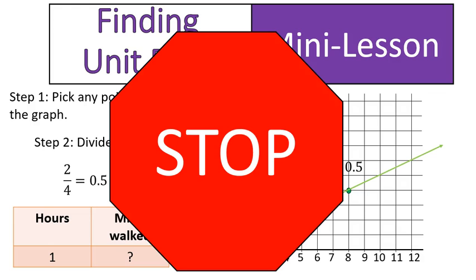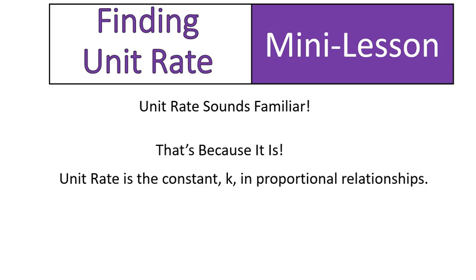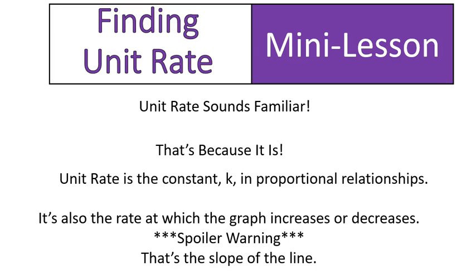Hold on. This sounds very familiar. This whole unit rate, constant rate. The unit rate is a constant, and in this case, it is the constant in proportional relationships. It is the constant. Unit rate and constant are the same. And also, spoiler warning, it's the rate at which the graph increases or decreases, and that, in the future, we will call slope.